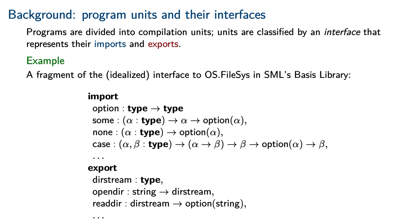In order to make what we are saying precise, let's discuss program units. Programs are divided into units, which are classified by interfaces that represent their imports and exports. For example, we may consider the idealized interface to a fragment of the os.filesys module in Standard ML's standard basis library. It imports some basic data types, including the option data type, which is a functional form of exception control, and it exports an abstract type representing a cursor into a directory, as well as some operations for interacting with this cursor.